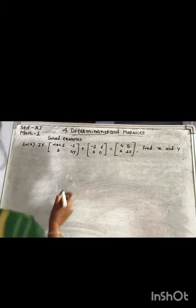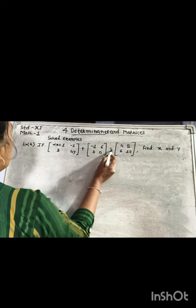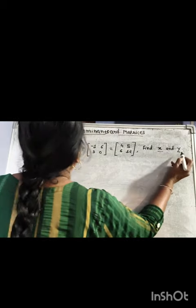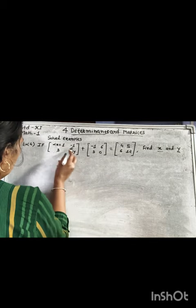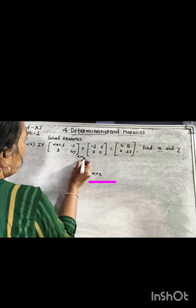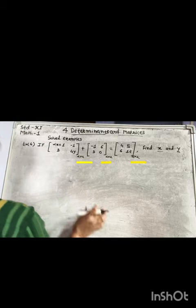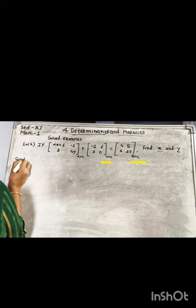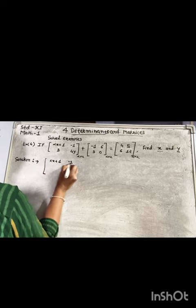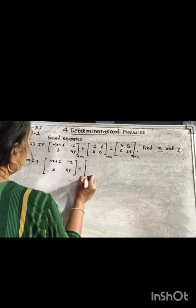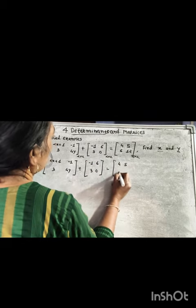Example 4: if the matrix contains [2x+1, -1; 3, 4y] plus [-1, 6; 3, 0] equals [4, 5; 6, 12], then find x and y. These are 3 matrices each of order 2 by 2 — 2 rows and 2 columns — therefore addition and subtraction is possible. We will find x and y.